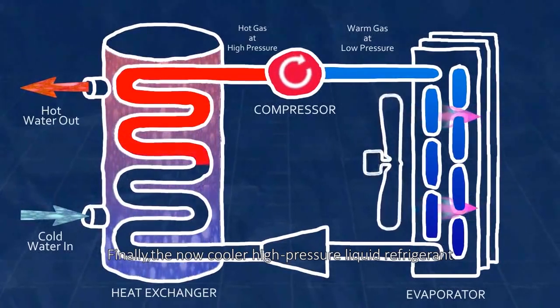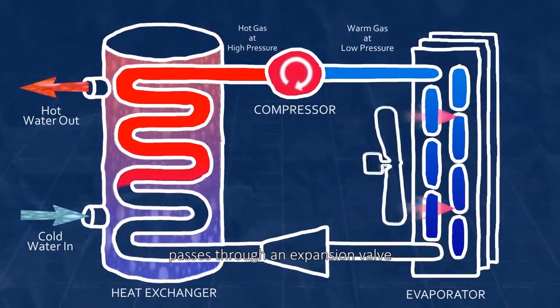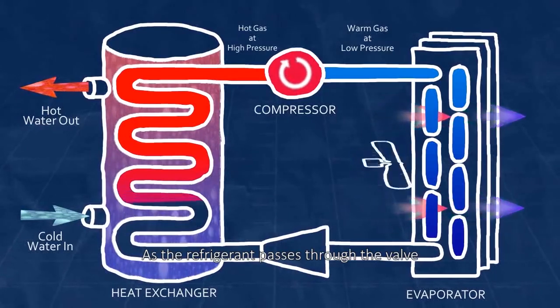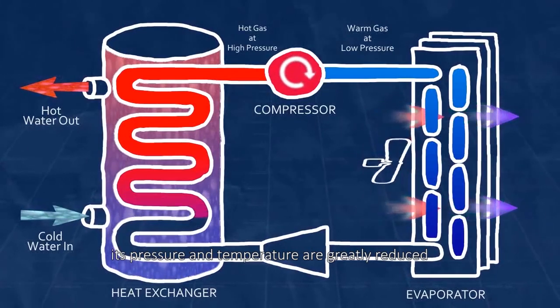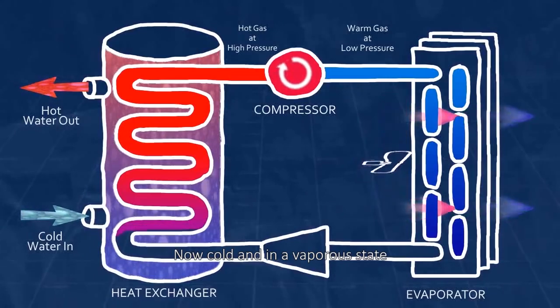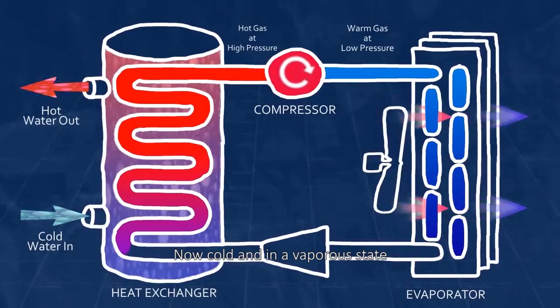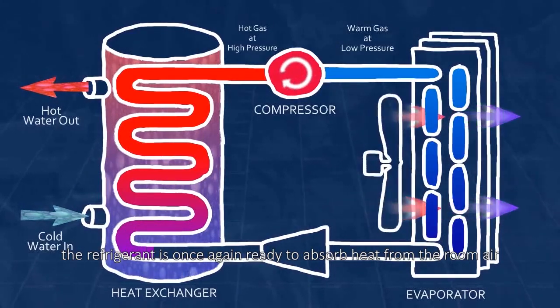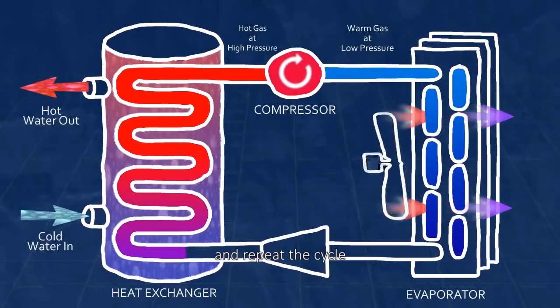Finally, the now cooler, high pressure liquid refrigerant passes through an expansion valve. As the refrigerant passes through the valve, its pressure and temperature are greatly reduced. Now cold and in a vaporous state, the refrigerant is once again ready to absorb heat from the room air and repeat the cycle.